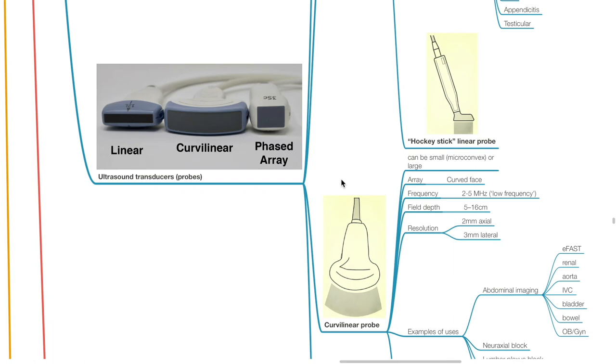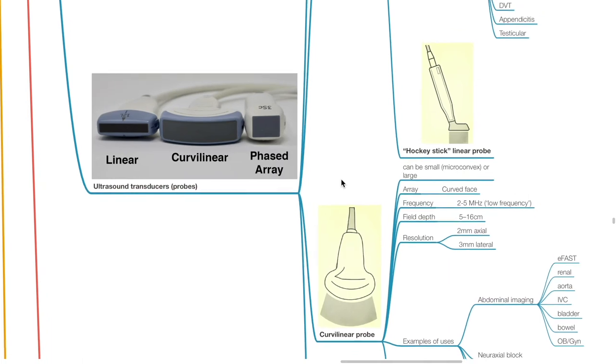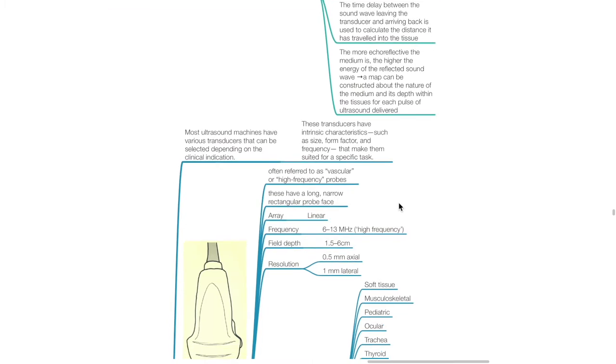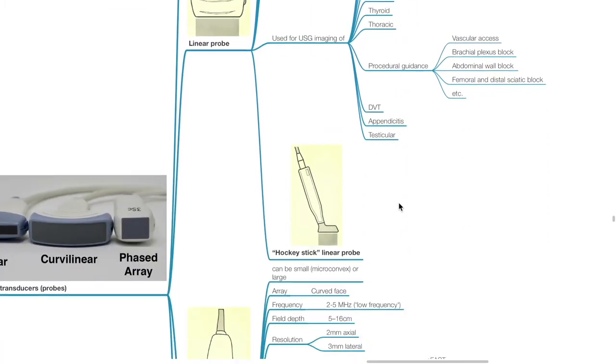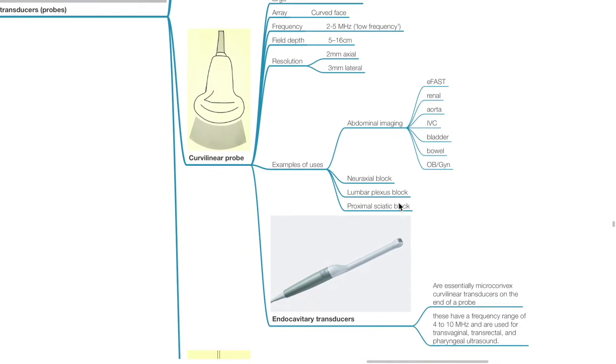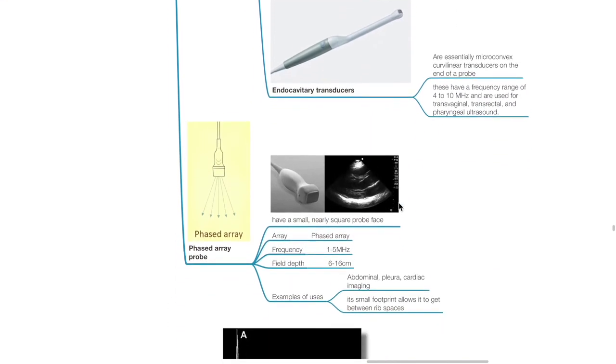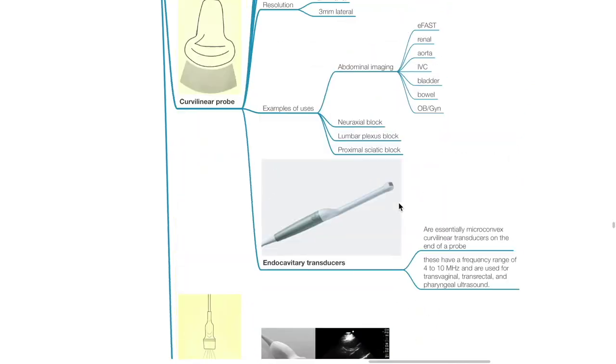Next we will discuss ultrasound probes or transducers. Most ultrasound machines have various transducers that can be selected depending on the clinical indication. These transducers have intrinsic characteristics such as size, form factor, and frequency that make them suited for specific tasks. Examples of ultrasound transducers include the linear probe, the curvilinear probe, endocavity transducers, and the phased array probe.